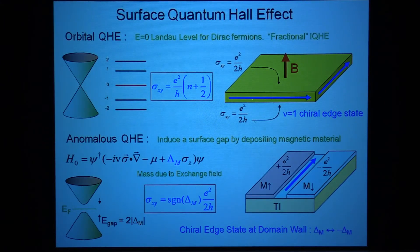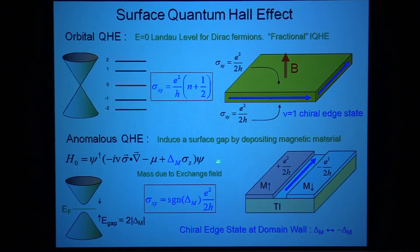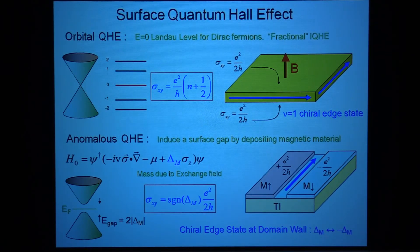You can also think about this by unfolding: if you gap the surface states on top and bottom with opposite magnetizations, then on a domain wall where the mass changes sign, you get a chiral Dirac fermion mode. This is an interesting thing one would like to engineer.